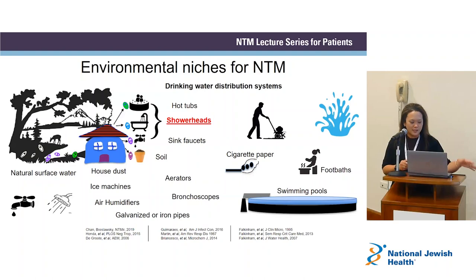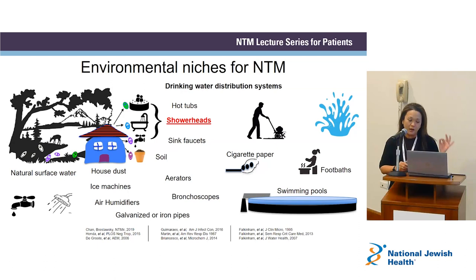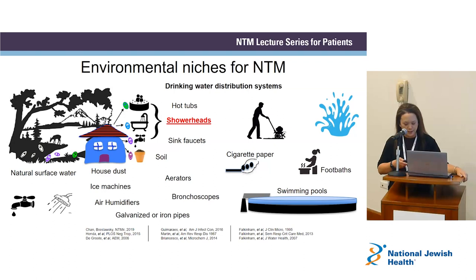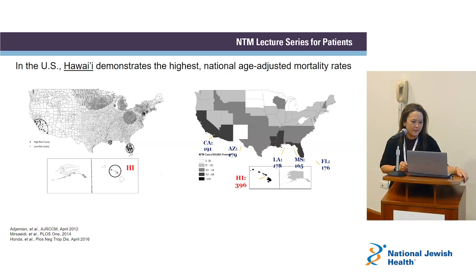Which species of NTM is found matters. There's a very nice report from many groups about where NTM organisms are found across various environmental niches. We know about hot tubs, nail salons, showerheads, kitchen sinks, faucets, ice machines, bronchoscopes, and heater-coolers — we heard about those outbreaks. There are a variety of niches that NTM like to live in. What are the environmental factors that contribute to NTM in these varied geographies?